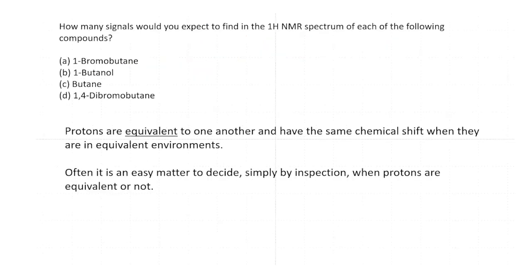How many signals would you expect in the proton NMR spectrum of 1-bromobutane, 1-butanol, butane, and 1,4-dibromobutane? From our previous discussions on NMR, we know that protons are equivalent to one another and have the same chemical shift when they are in equivalent environments. The key word here is the environment.